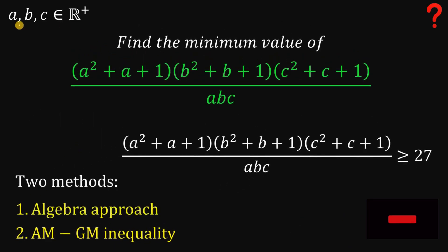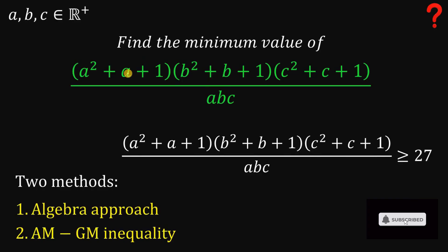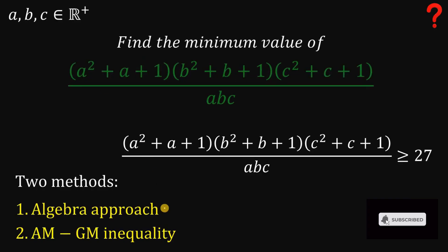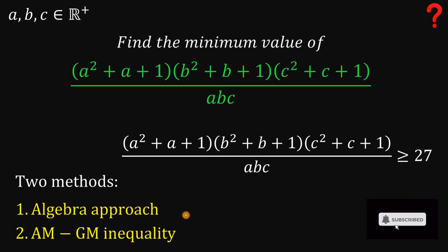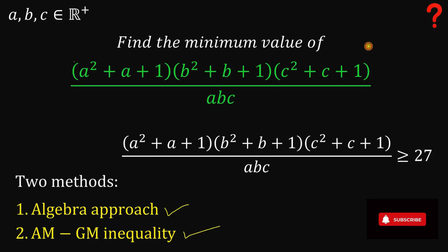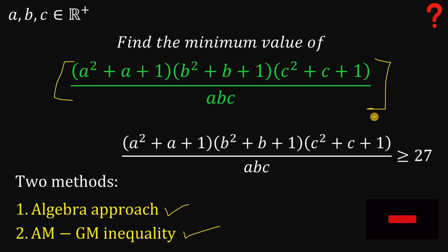Therefore, given that A, B, and C are all positive numbers, the minimum value of this expression, found using two methods — the algebra approach and the AM-GM inequality — is 27. And as always, we are done.